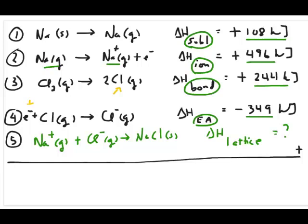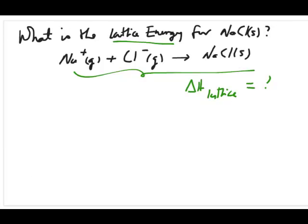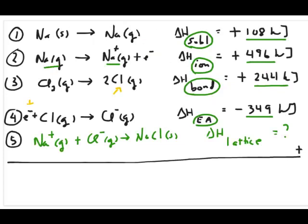If you were to add all of these together, last step in your series of steps is the lattice energy reaction itself, which is always written as the sodium plus and Cl minus going to the ionic solid, as I mentioned in the previous slide.